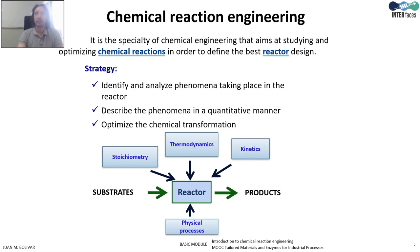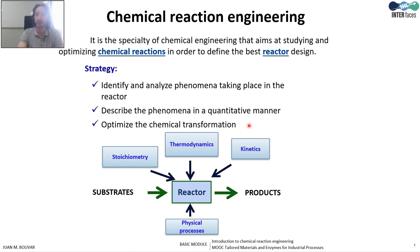Chemical reaction engineering is the discipline of chemical engineering that studies and optimizes chemical reactions, also biochemical reactions, and helps us to design the reactor. The strategy of this methodology is to identify the phenomena that are taking place in the reactor, to quantify those phenomena, and then to assist in optimizing the biochemical transformation.